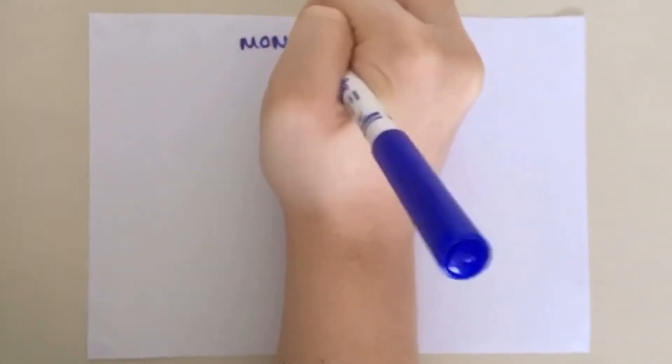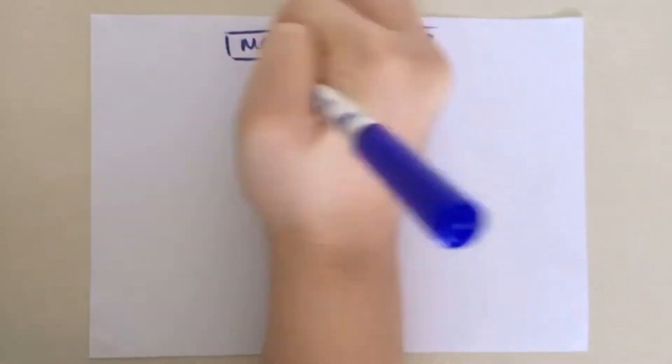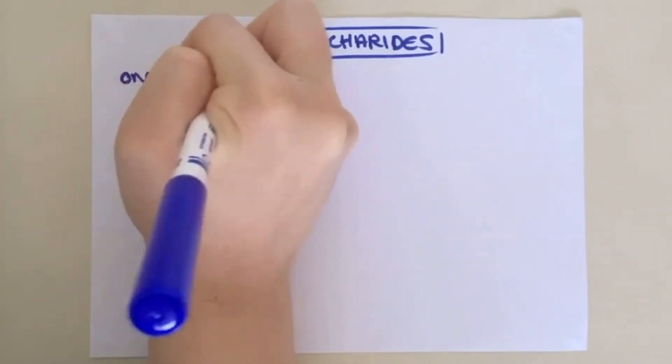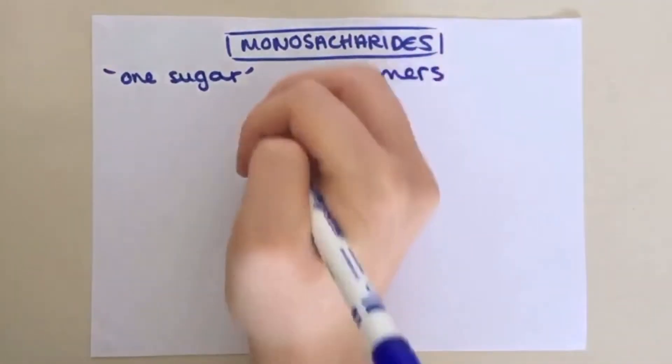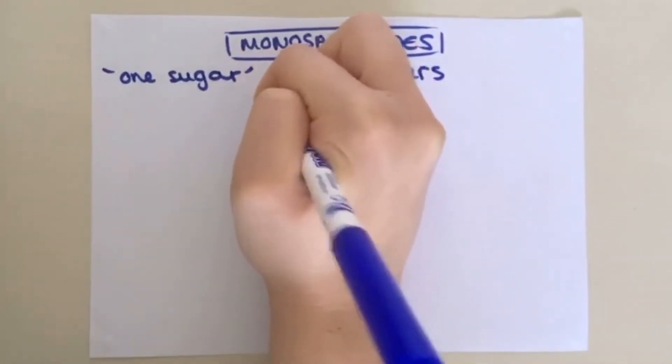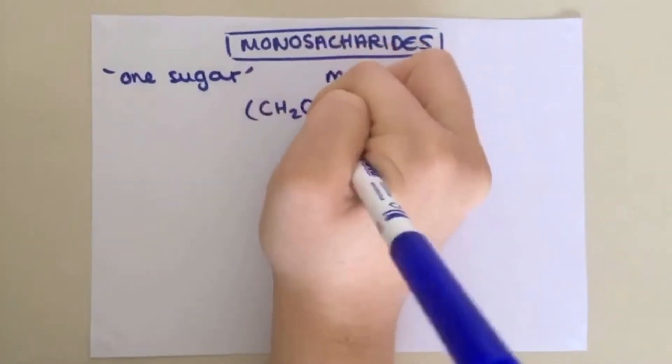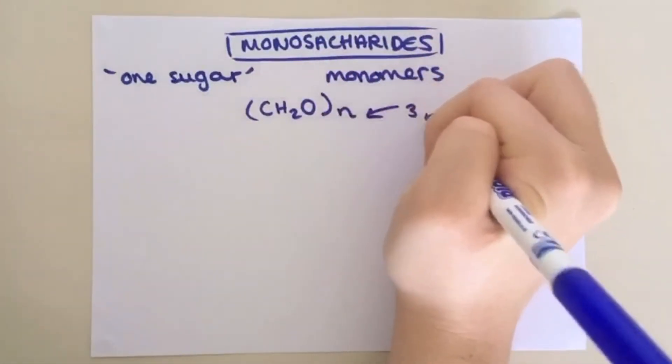The first class of carbohydrate is monosaccharides, meaning one sugar. These are the basic monomers that make up large carbohydrates. They have the general formula CH2ON, where N can be 3, 5 or 6.